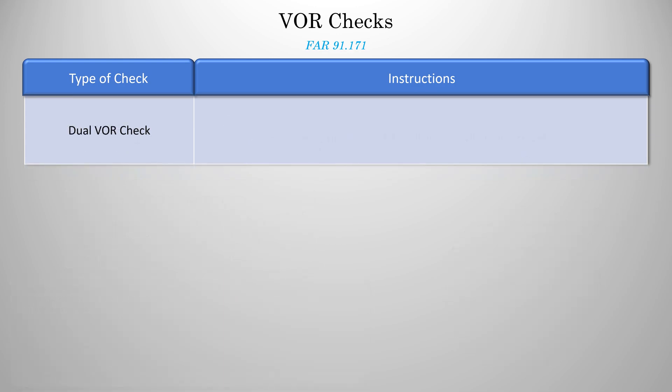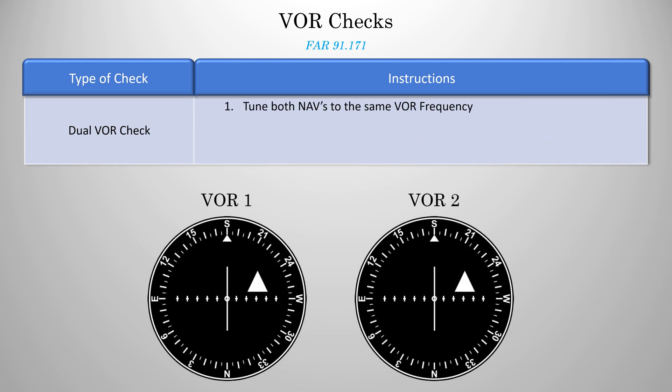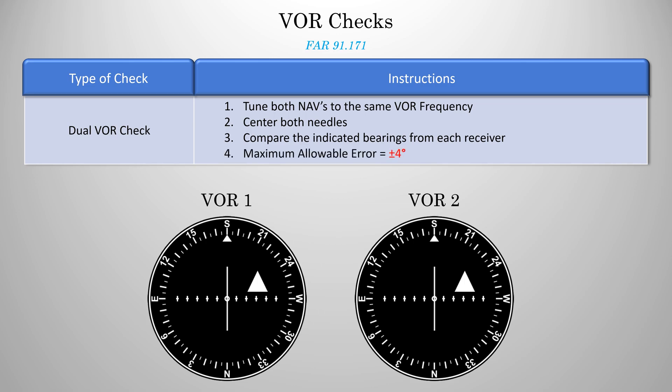For the dual VOR check, you'll need two VOR receivers. First, tune both of them to the same frequency and center both needles. Once you've done that, simply compare the indicated bearings from each receiver and ensure they're within 4 degrees of each other.